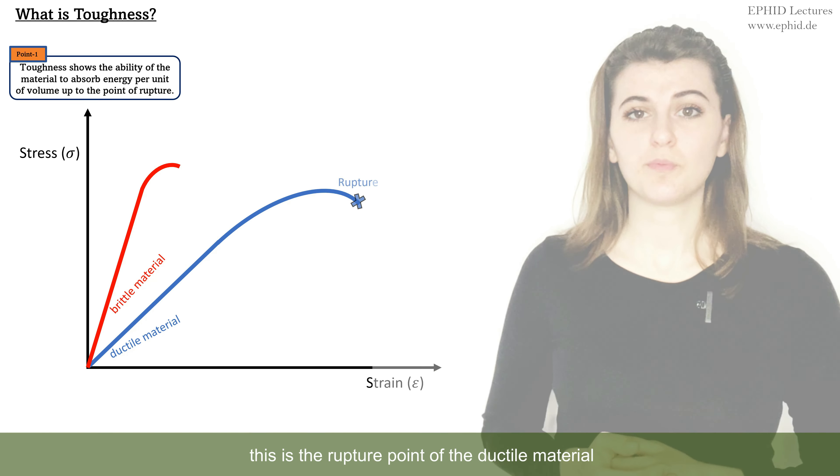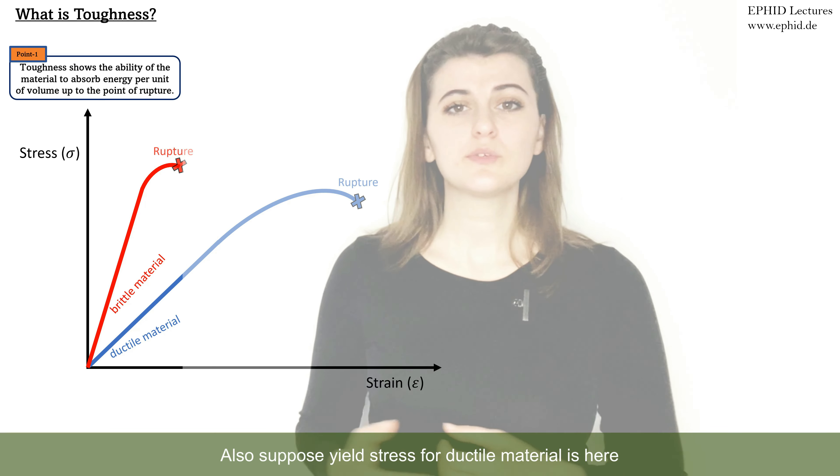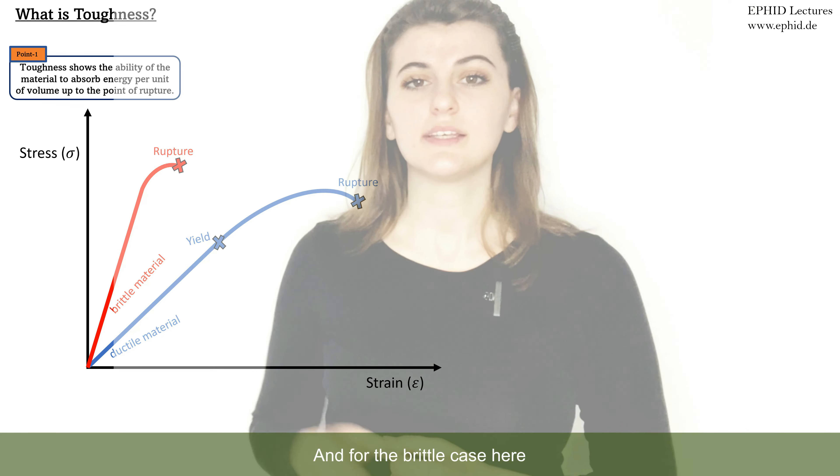This is the rupture point of the ductile material and this is the rupture point of brittle material. Also suppose yield stress for ductile material is here and for the brittle case here.